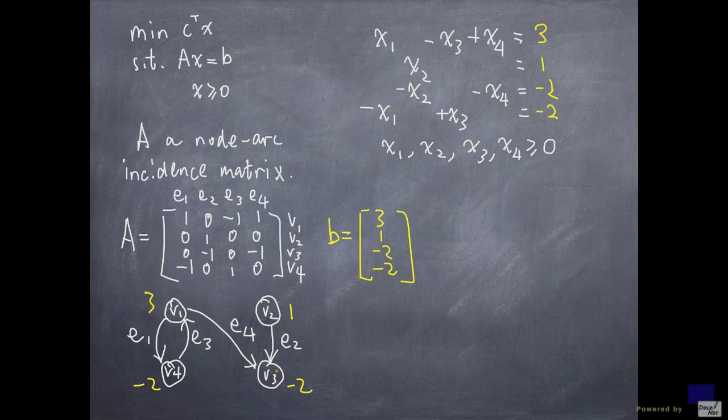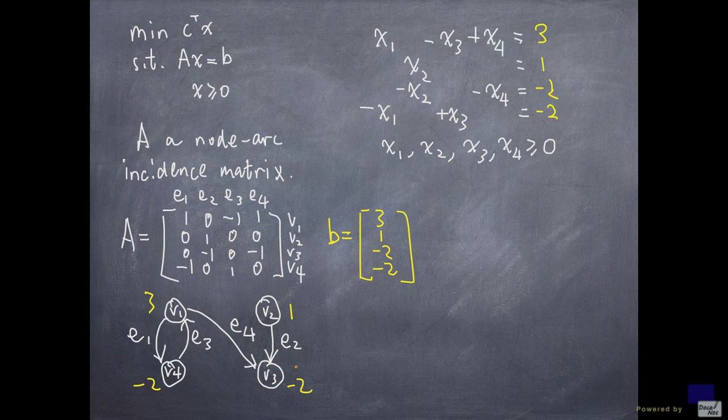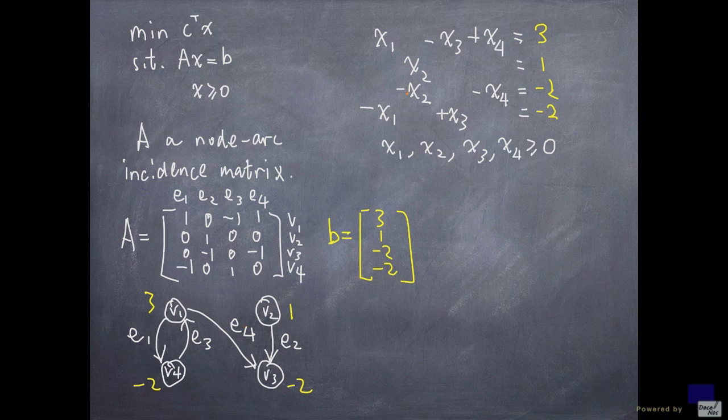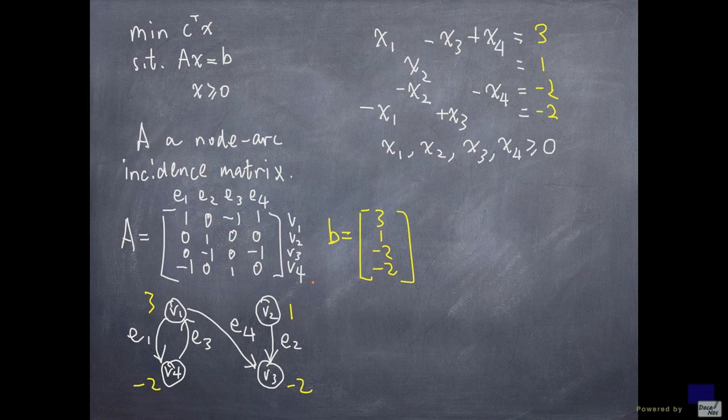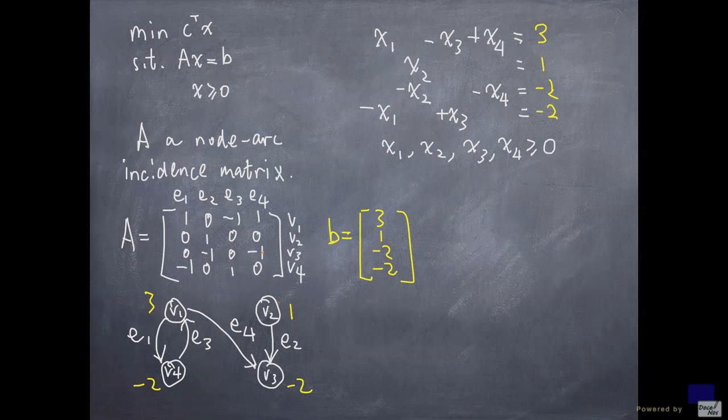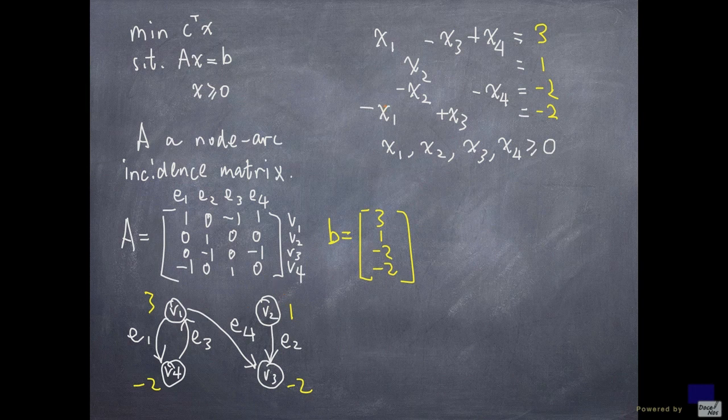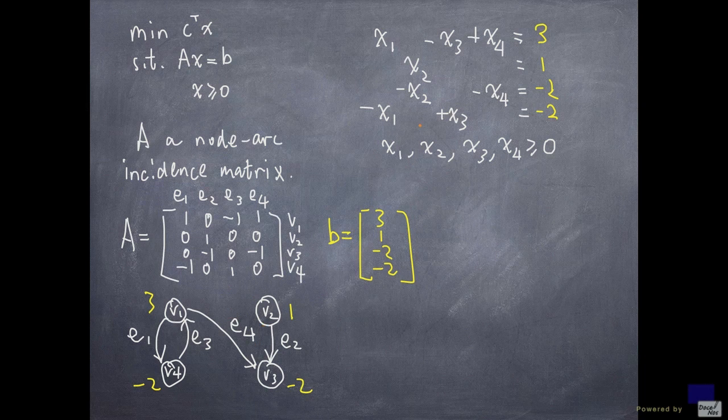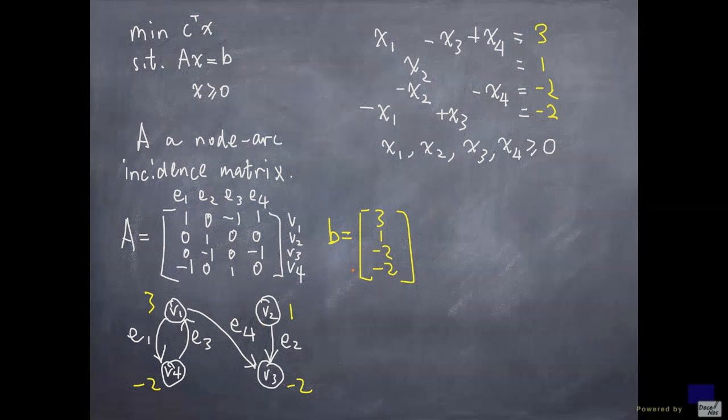And if I look at the node v3, there's nothing coming out of v3, but two arcs going into v3. It's e2 and e4. So the coefficients of x2 and x4 are negative. And you can gather that for every node, the arcs coming out will have positive coefficients in their corresponding x variables. And for the arcs coming in, the corresponding x variables will have negative coefficients.